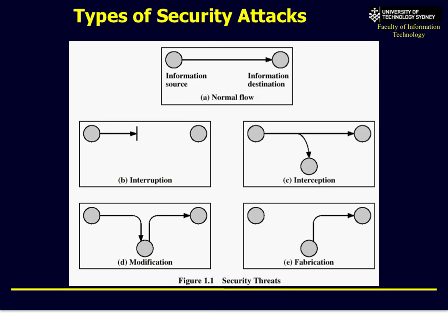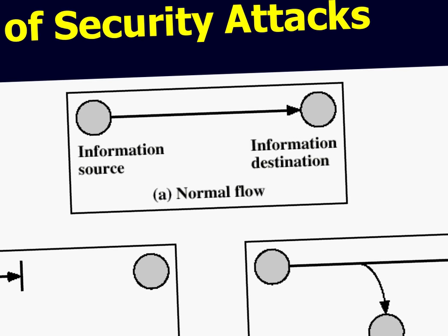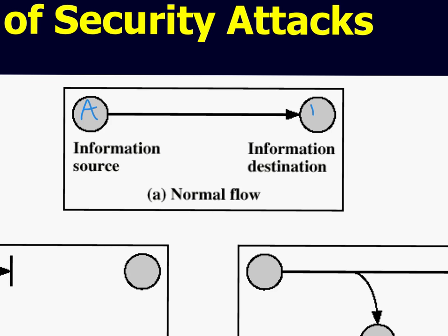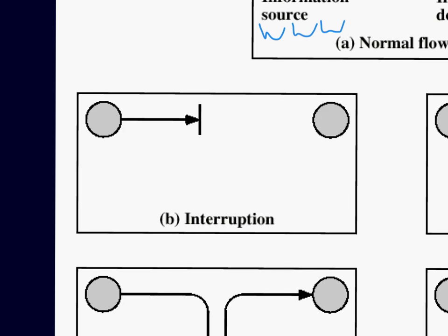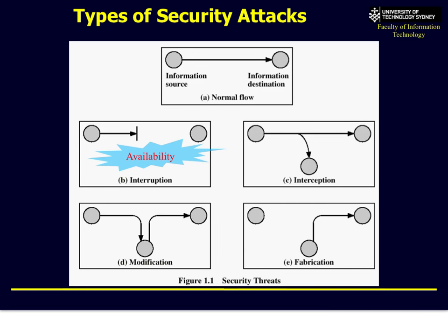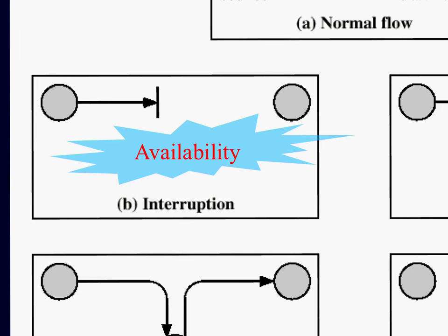To work out the security mechanism to counter a security attack, we need to know what sorts of attacks are out there. In a normal situation, we're only interested in getting information from point A to point B — for example, from a web server (www) to a browser. But what happens if the information can't get through at all? That's called an interruption — an availability attack.